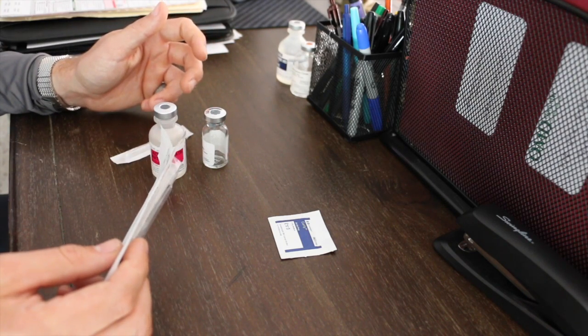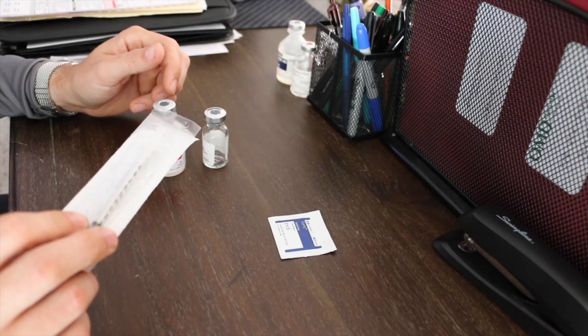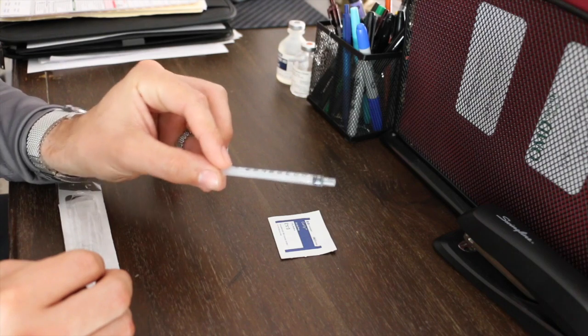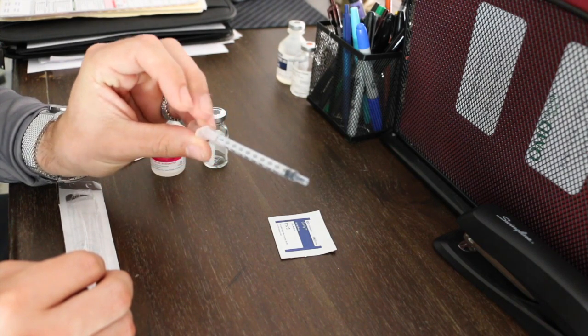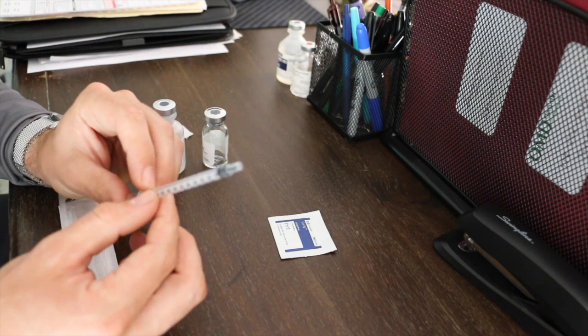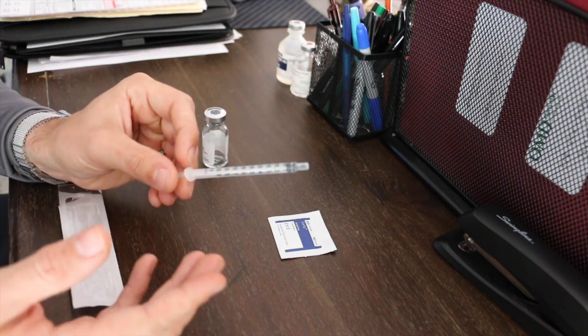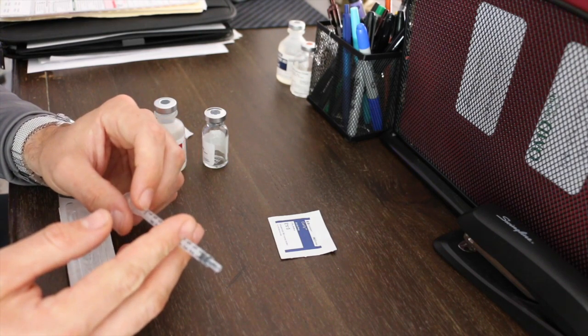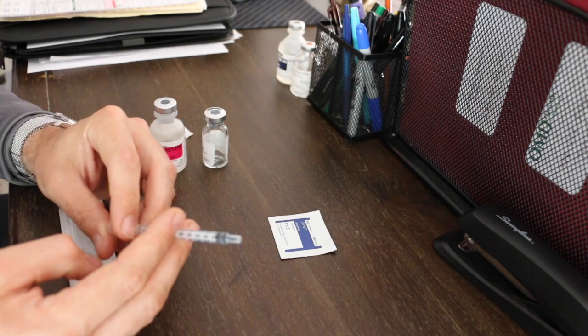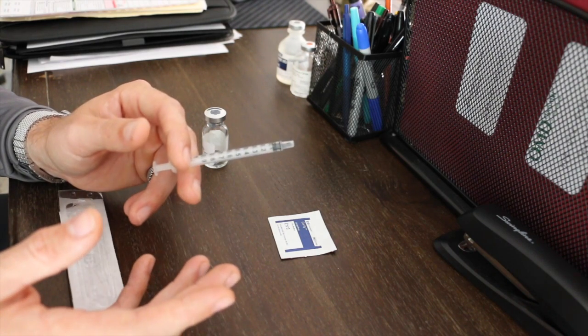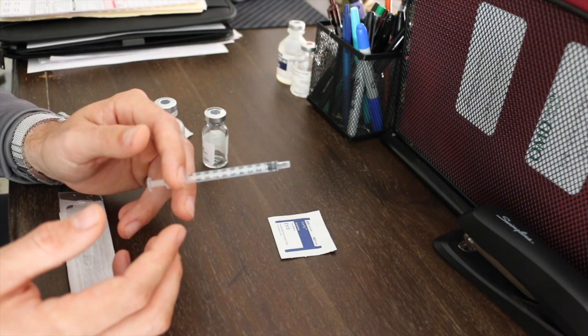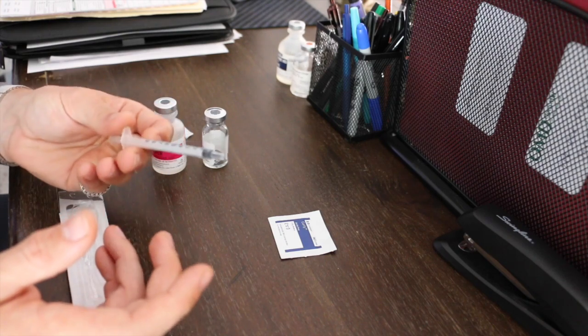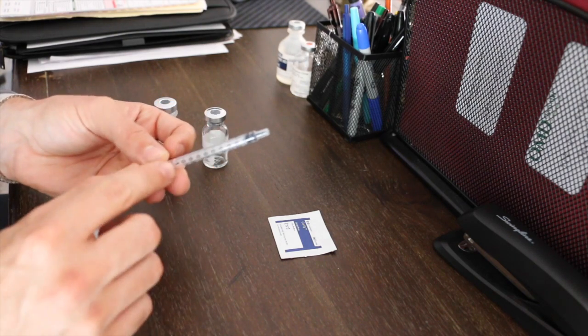This is a one ml syringe. It has tenth marks all the way up to one ml. One ml and one cc are the same. If your prescription requires two, three, four, five or six ml, they should provide you with either a five ml or 10 ml syringe. You shouldn't have to pull six times with this, but worst case scenario, if you need five ml, you would just pull five separate times up to the one ml mark.